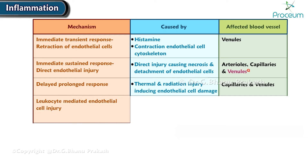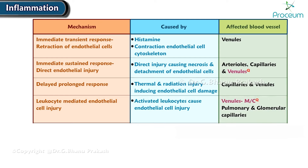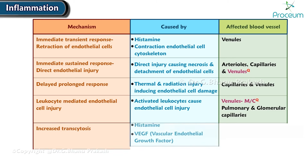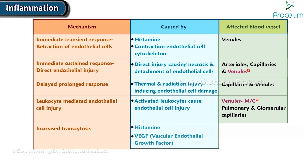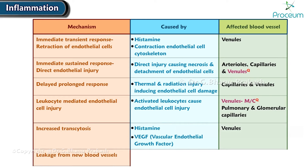Leukocyte-mediated endothelial cell injury occurs when leukocytes are activated and cause endothelial cell injuries, most commonly affecting the venules, but may also affect pulmonary and glomerular capillaries. Increased transcytosis is caused by histamine and VEGF and affects the venules. Leakage from new blood vessels, most commonly caused by VEGF and histamine, affects the site of angiogenesis.